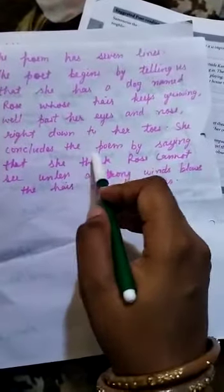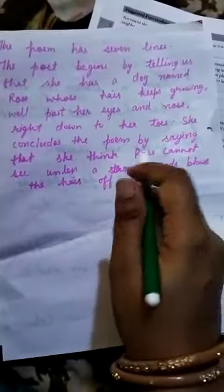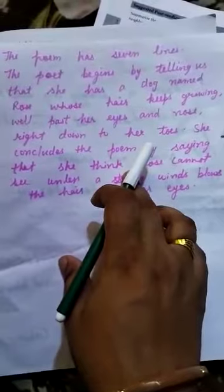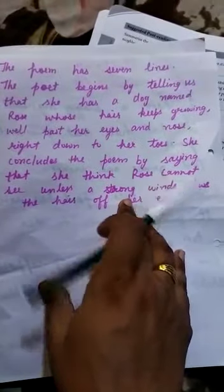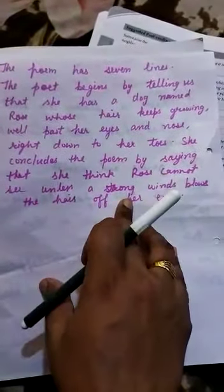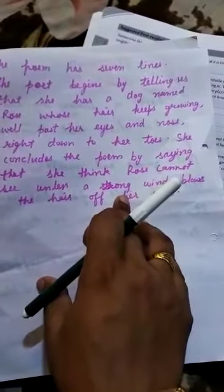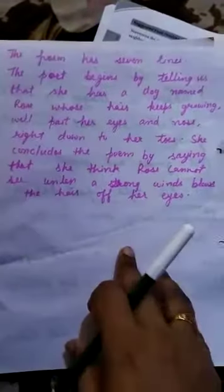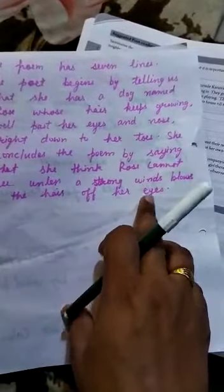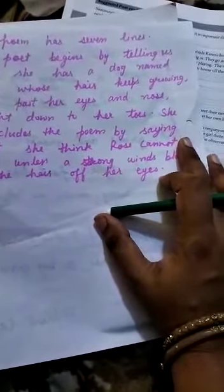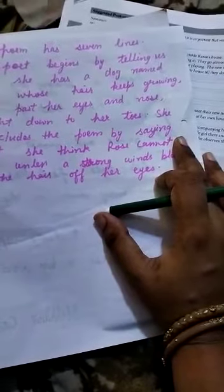The poet wants to say that Rose has very big hair, and she thinks that Rose cannot see. The poem has seven lines. She says that she has a dog named Rose.